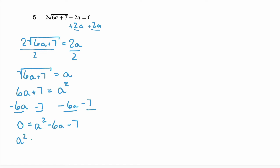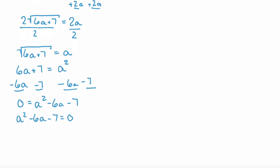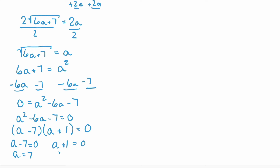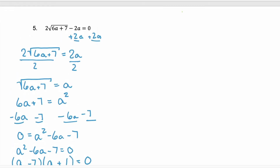Or, a squared minus 6a minus 7 equals 0. That's a trinomial, so let's factor it. The two values that multiply to negative 7 but add to negative 6 would be negative 7 and positive 1. Those are our binomial factors. Using the zero product property: a minus 7 equals 0, or a equals 7; and a plus 1 equals 0, or a equals negative 1. We ended up with two solutions, so we need to check both.